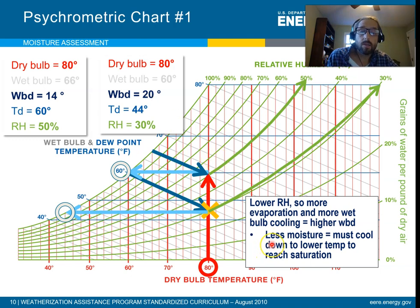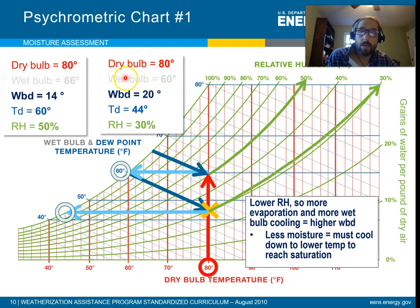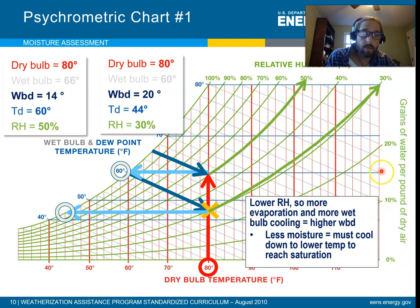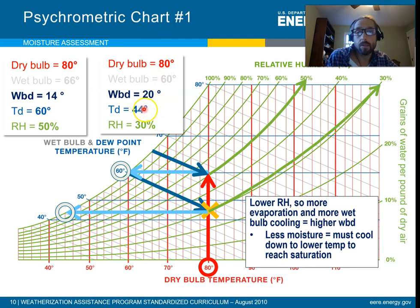The dew point dropped from 60 to 44. From the first example to the second example, we had a lower relative humidity. If you follow the line across, you can see — here's the first part, dew point was 60, this is our absolute humidity. Down here, this is our absolute humidity for the second example. Our absolute humidity was lower here than in the first example. So the actual humidity in the air was lower, which is why the relative humidity is down.